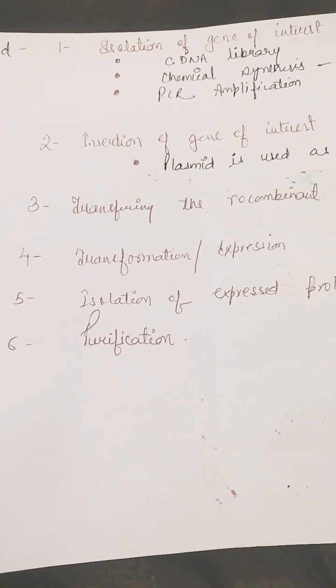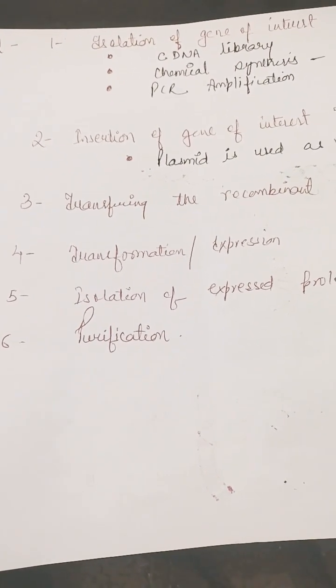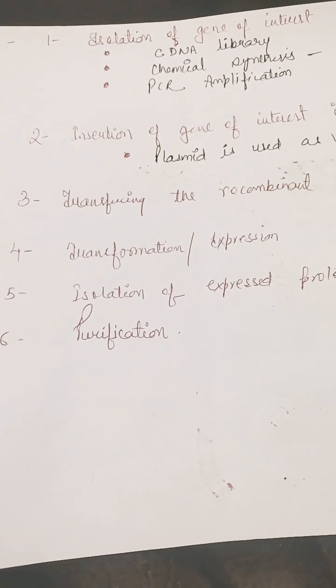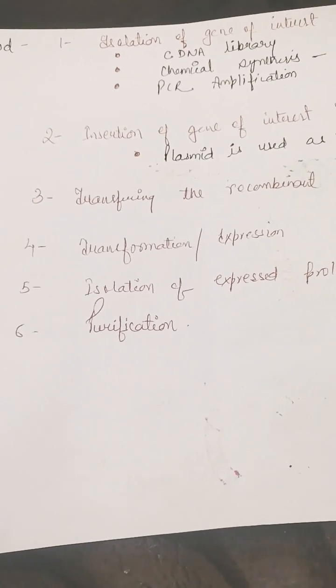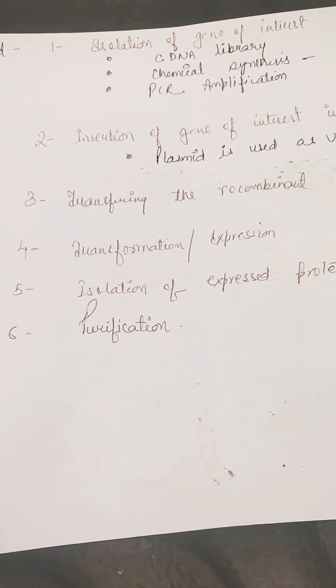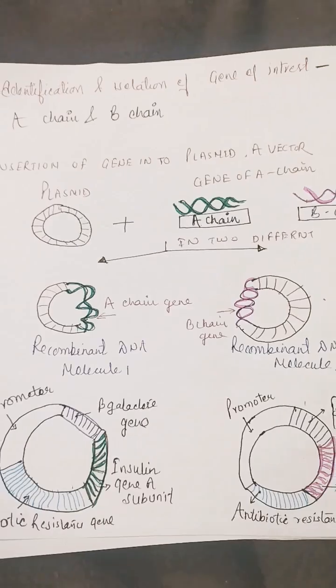In the transformation, the host cell starts expressing that particular protein. In the fifth step, there is isolation of expressed protein, and finally after isolating there will be the process of purification. How does